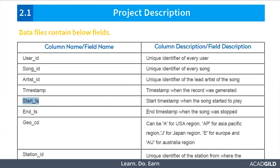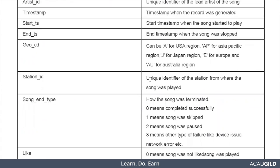Next is end_TS — the end time. When you stop the song, that particular time gets recorded and is filled in this column. Then there is the area location field: A stands for USA region, AP for Asia Pacific, J for Japan, E for Europe, and AU for Australia region. Finally, station ID — even radio stations play songs, and each unique radio station will have its own ID.